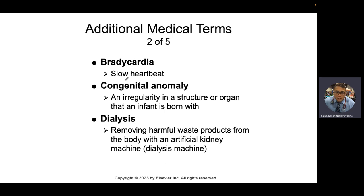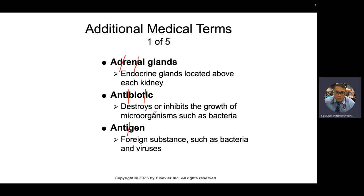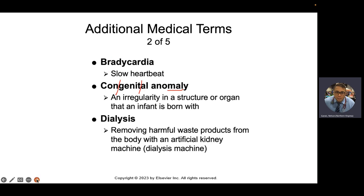Something that's congenital — let's look at the word. 'Con' means with, 'genit' relates to birth like natology, and 'al' means pertaining to. So something that goes wrong with birth. A congenital anomaly is an irregularity — potential pathology — because it has the root 'mal,' meaning bad, or 'anom,' meaning something you can't really name that's out of the norm.